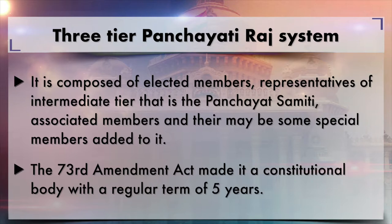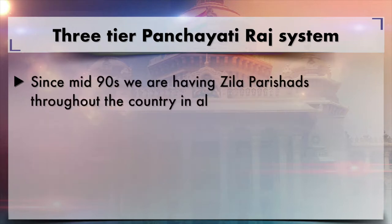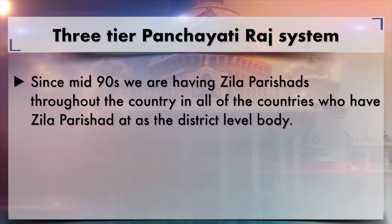The 73rd Amendment Act made Zilla Parishat a constitutional body with a regular term of five years. That means since the mid-1990s we are having Zilla Parishats throughout the country — in all states we have Zilla Parishats as the district level body.